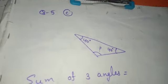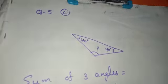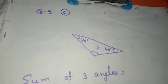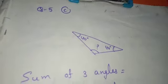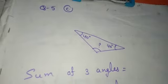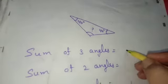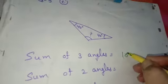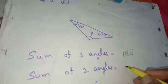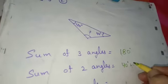How will we calculate it? As in the previous part, firstly we write the sum of three angles as 180 degrees, then add the two given angles: 40 plus 40.